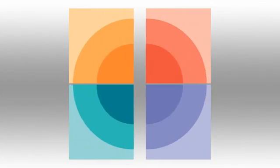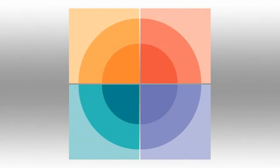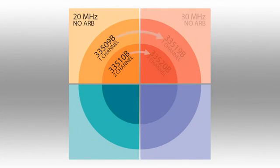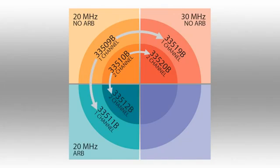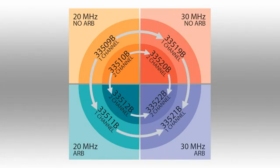For example, begin with a 20 MHz one or two channel model now, then upgrade later to 30 MHz bandwidth, add arbitrary waveform capability, or add both.